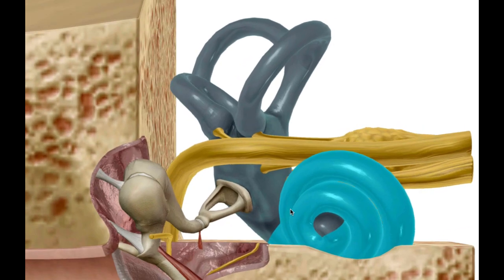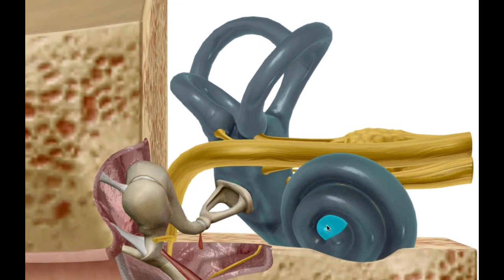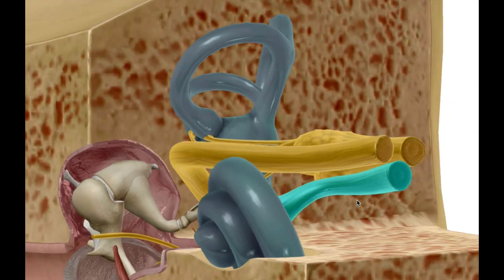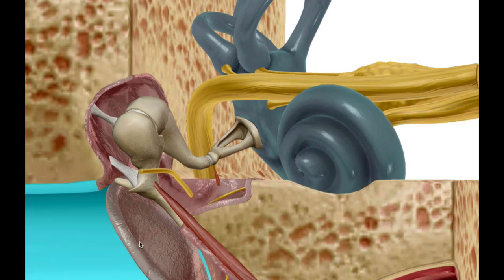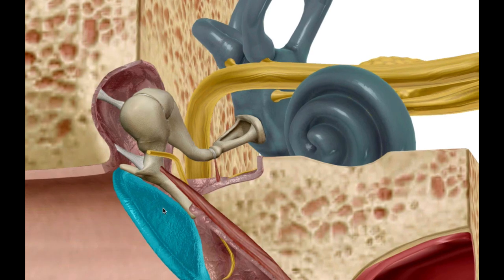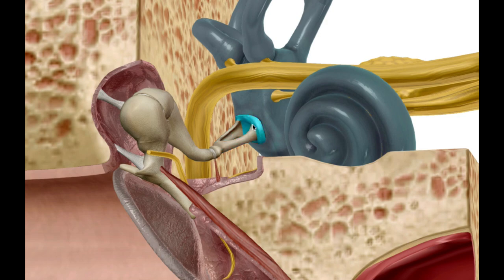The cochlea is the snail-looking aspect of the inner ear that takes care of hearing. How exactly are the mechanical pressure waves of sound converted into a nervous impulse that travels via the cochlear nerve — cranial nerve eight — to the brain? Sound enters the external acoustic meatus, those sound waves create a vibration on the tympanic membrane, and that oscillation passes energy to the malleus, then to the incus, and finally to the stapes.